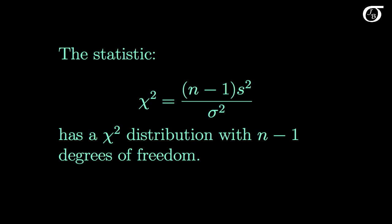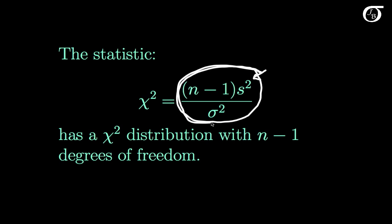Assuming we are sampling from a normally distributed population, this statistic has a chi-square distribution with n-1 degrees of freedom. Before we draw our sample, S squared is a random variable, and thus this entire quantity is a random variable with a chi-square distribution with n-1 degrees of freedom. We are going to base our hypothesis test on this idea, replacing the true value of sigma squared with our hypothesized value of sigma squared in our test statistic.